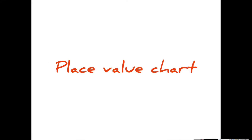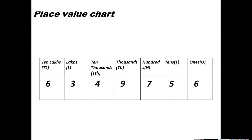Let us understand how to write numbers according to their place value chart. Here is an example: 63,49,756. The place value of 6 is 1s. Place value of 5 is 10s. Place value of 7 is 100s. Place value of 9 is 1000s. Place value of 4 is 10,000s. Place value of 3 is lakhs. And the place value of 6 is 10 lakhs.